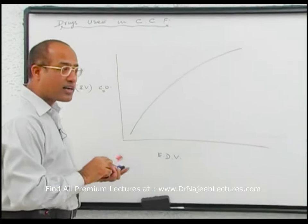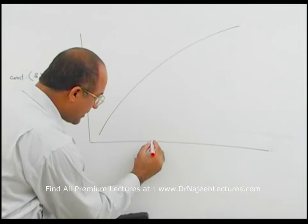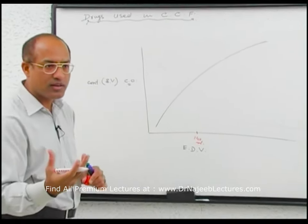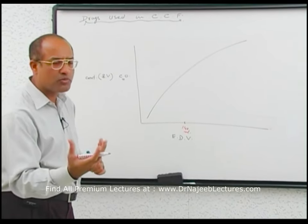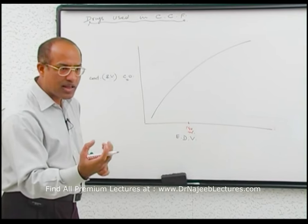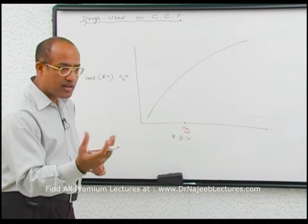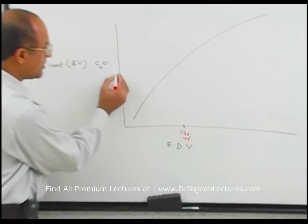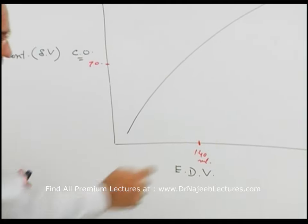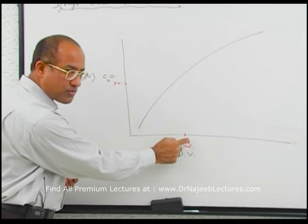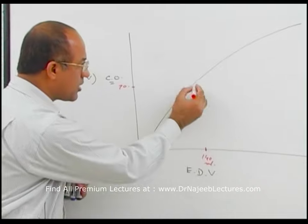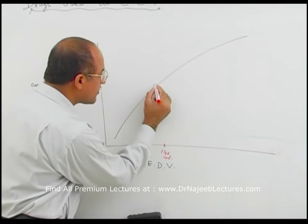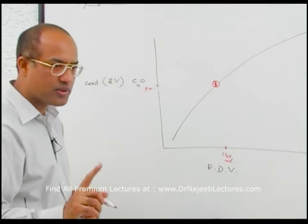The point to understand is at which point the heart normally operates. In a healthy heart, end-diastolic volume is about 140 ml. When the left ventricle has 140 ml and does a healthy contraction, about 50% of blood is ejected, giving a stroke volume of about 70 ml. So the normal heart operates at this point on the graph.